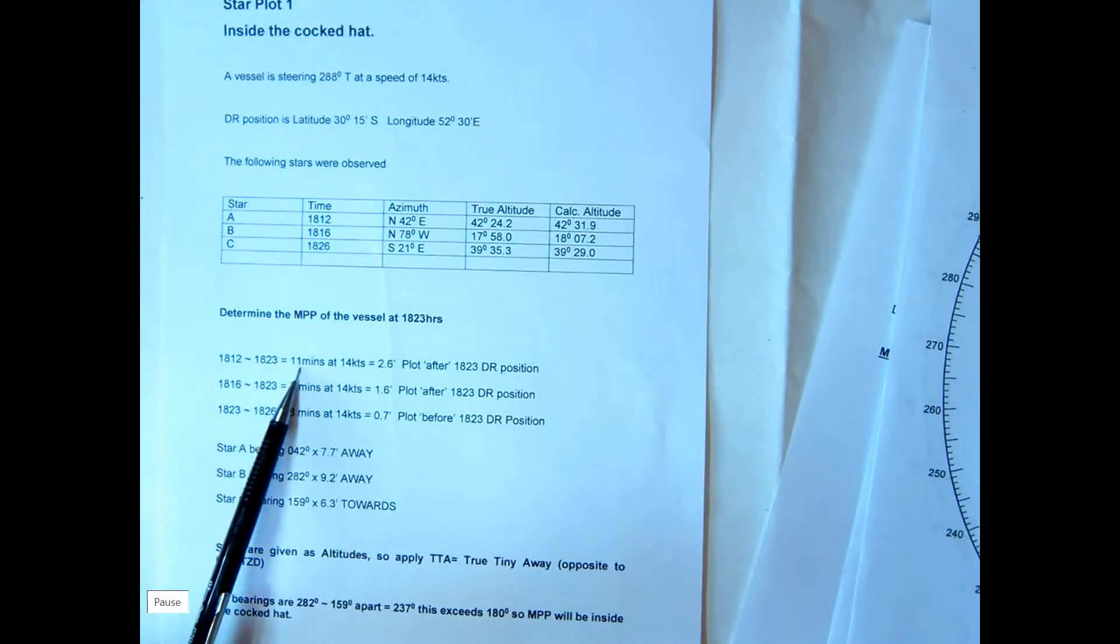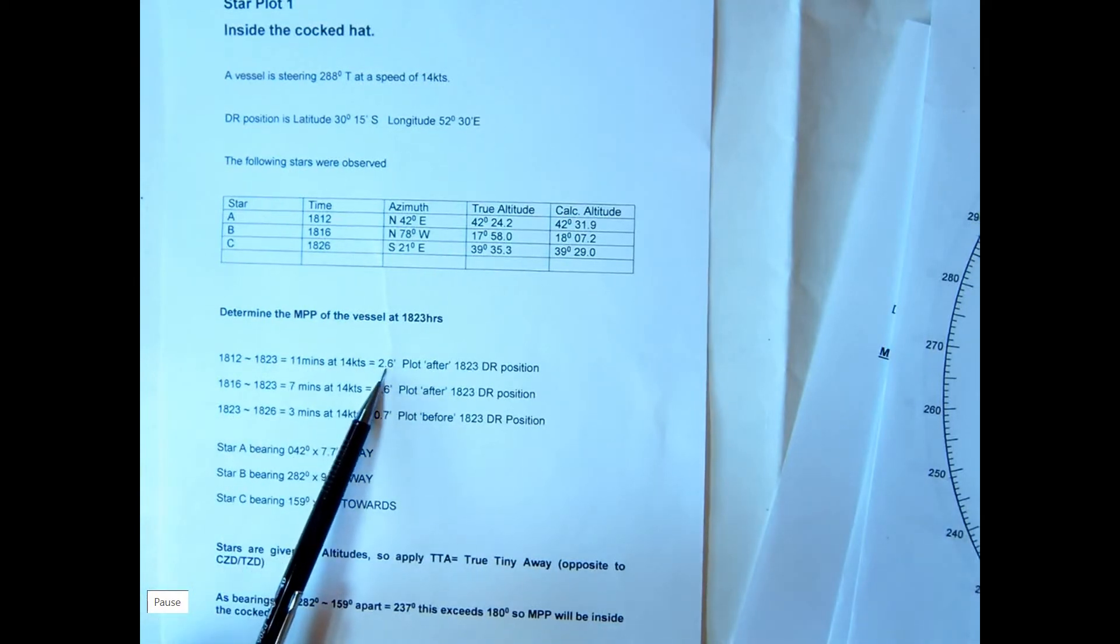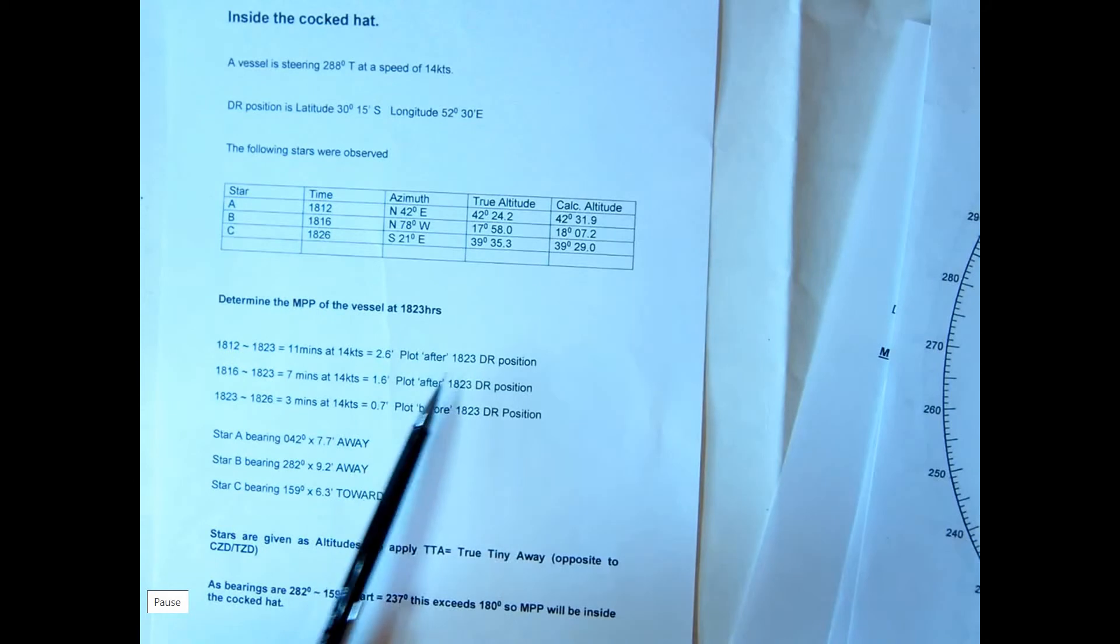So 1823 is 11 minutes at 14 knots. We have to plot 2.6 miles after the 1823. Star B, 1.6 after and star C, 0.7 before.